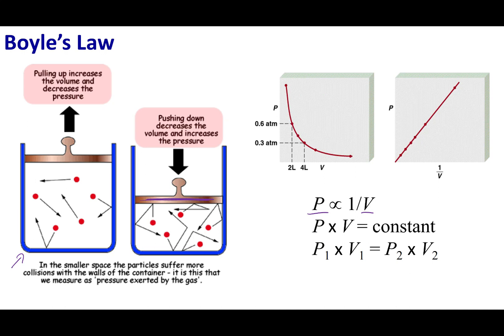Remember what pressure is due to: the collision of gas particles against the walls of the container. If I shrink my volume down, the gas particles are going to hit my container more often. If they hit the sides more often, the pressure is going to go up. This is what Boyle discovered.